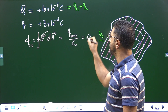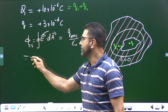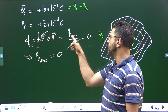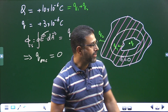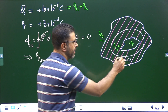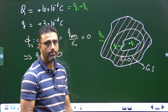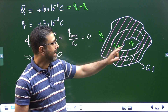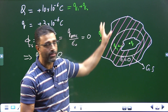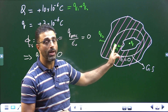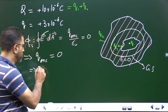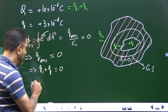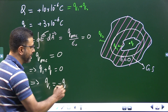If the flux through the closed surface is zero, then the charge enclosed by that closed surface must be zero. The Gaussian surface contains two charges: the cavity charge Q and the inner surface charge Q1. So Q1 + Q must equal zero, which means Q1 = −Q.